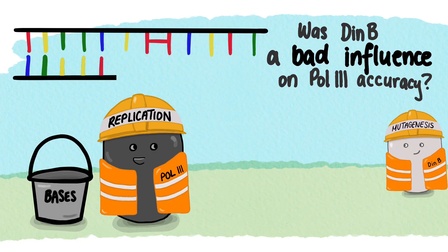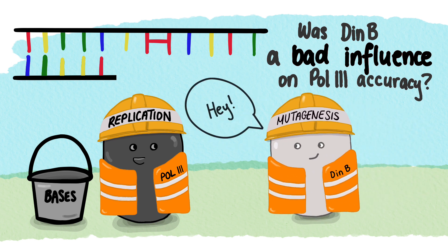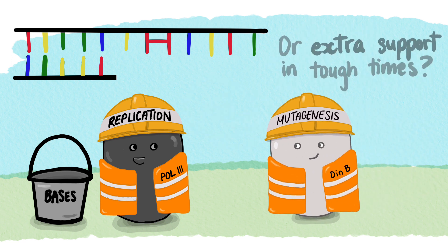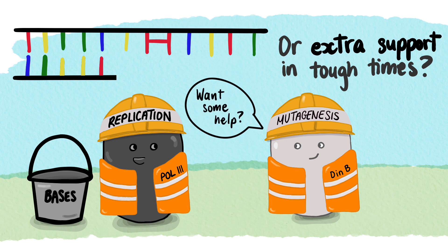It was proposed that DIN B somehow altered the normal polymerase's activity to make it work in situations it normally can't manage.